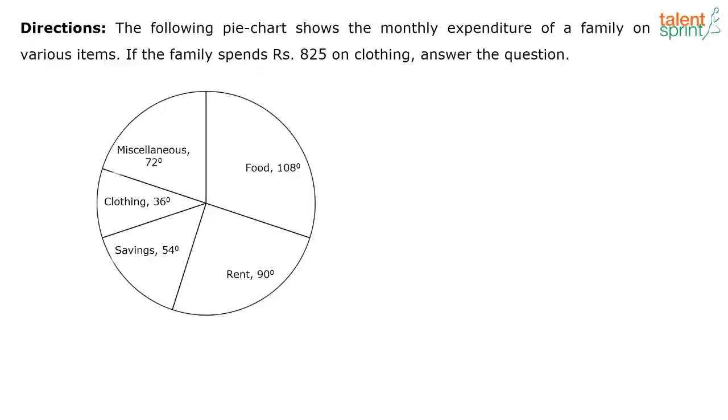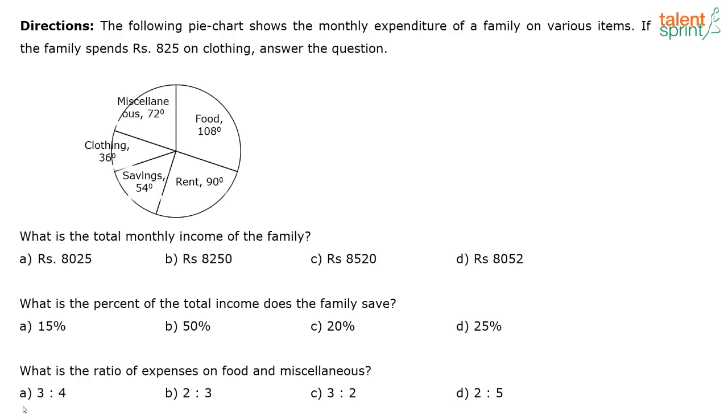Next question. There are three questions from this set. The following pie chart shows the monthly expenditure of a family on various items. The family spends rupees 825 on clothing. Answer the questions.